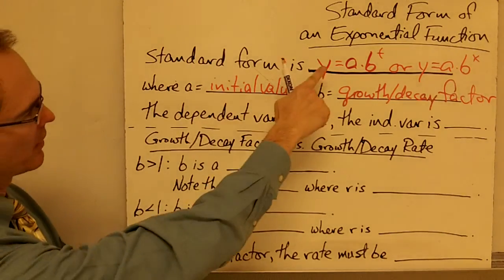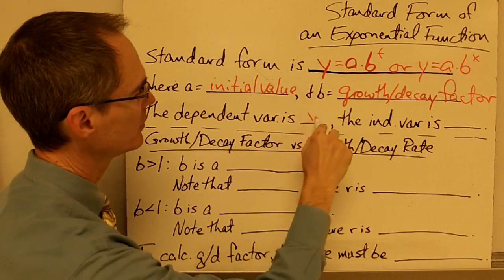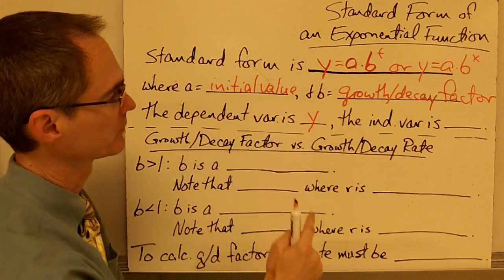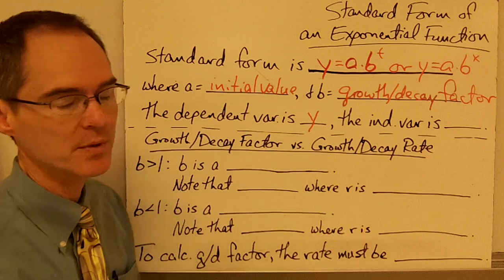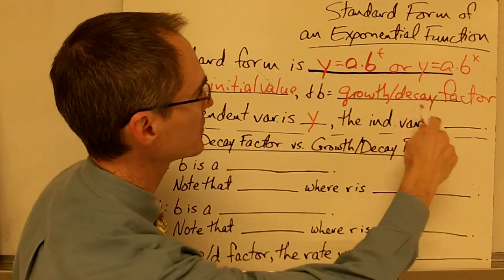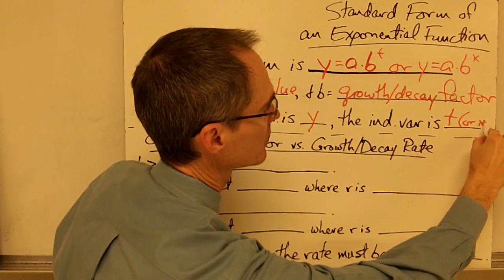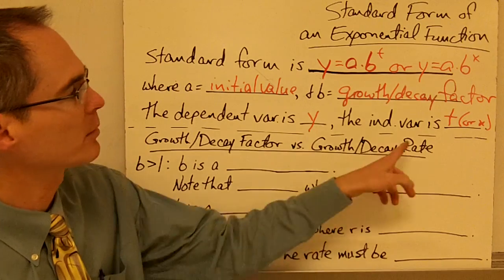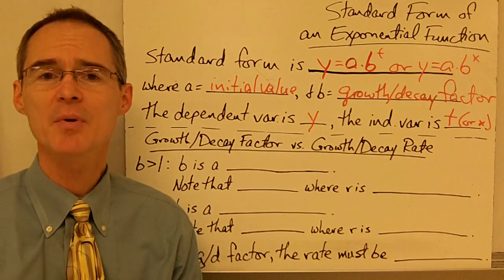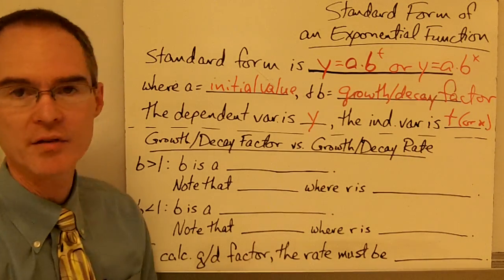The other parts of this standard form: the dependent variable, sometimes called the output variable, is y. The independent variable, sometimes called the input, is t or x. The reason the independent variable is often written as t is because in an exponential function, the independent variable is very often time. But it's still the same function.